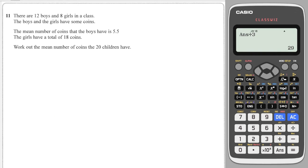Again, another question very similar. These questions are very common. 12 boys and 8 girls in a class, the boys and girls have some coins. The mean number of coins that the boys have is 5.5, so we can say the total of the boys divided by the number of boys, which is 12, is equal to 5.5. We can then work out the total by doing 12 times 5.5, which is 66. So the total number of coins the boys have is 66.